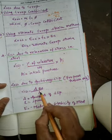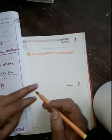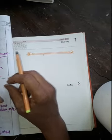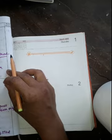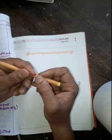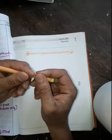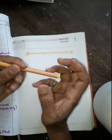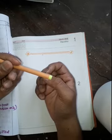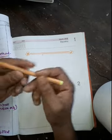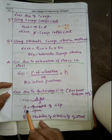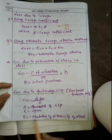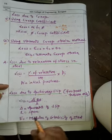The loss due to anchorage slip is calculated as: Loss = Δ × E_s / L, where Δ is the amount of slip, L is the span, and E_s is the modulus of elasticity of steel. Because slip takes place, the cable loses its tensile capacity, resulting in a loss in prestress.